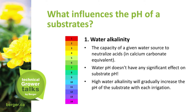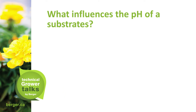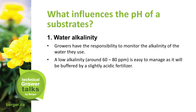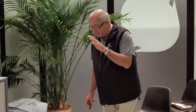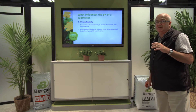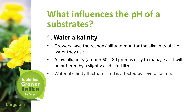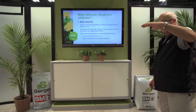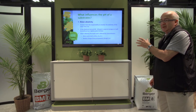High water alkalinity will gradually increase the pH of the substrate with each irrigation. Growers have the responsibility to monitor the alkalinity of the water they use. A low alkalinity around 60 to 80 is easy to manage, as it will be buffered by a slightly acidic fertilizer, so the grower does not need to add acid injection. Water alkalinity fluctuates and is affected by several factors: the water source — whether it be well, surface, or city water — and weather changes causing heavy precipitation or drought, which can cause ponds to drop and alter the alkalinity or even the chemical nature of the water.